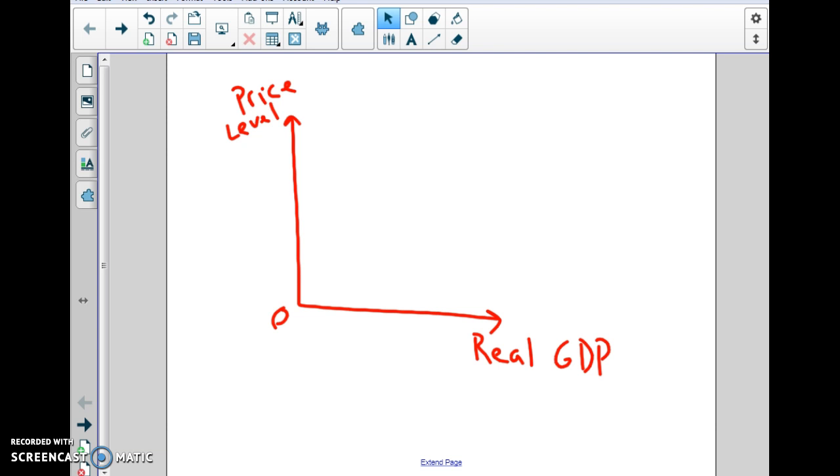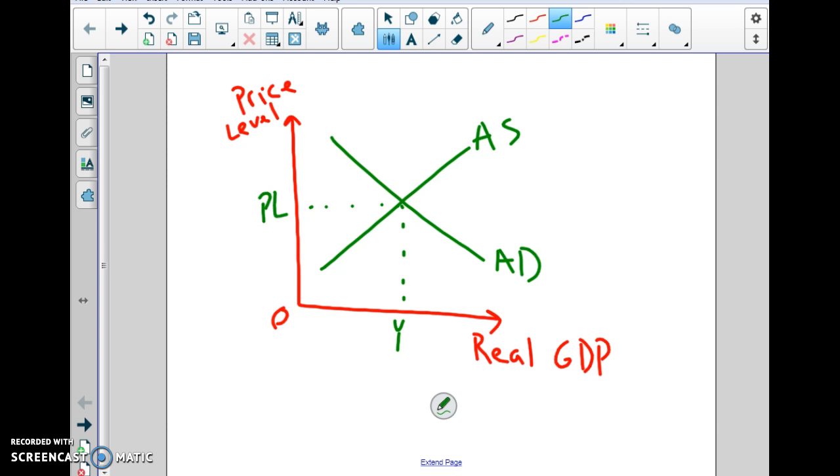So demand pull inflation. Remember, you don't even need the long-run AS. You just need your AS and AD. That'll be our output, and that'll be our price level. And I asked you to think of some things that could cause demand pull. Remember, there's any positive demand shock, so an increase in wealth, stock, bond, housing market.